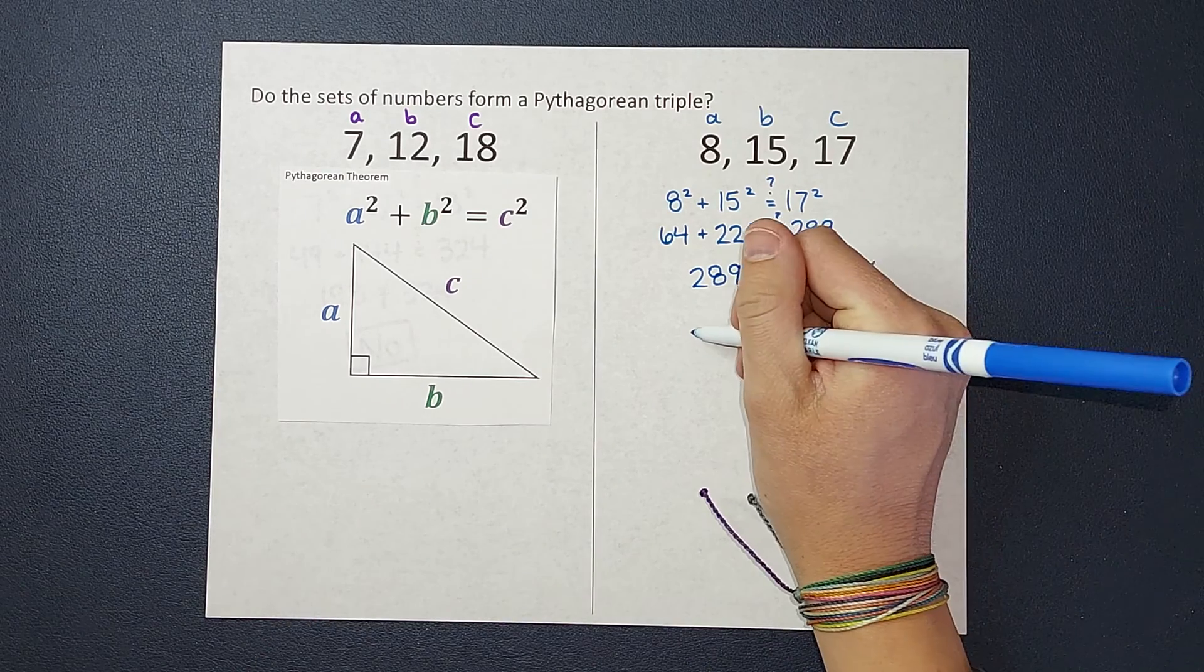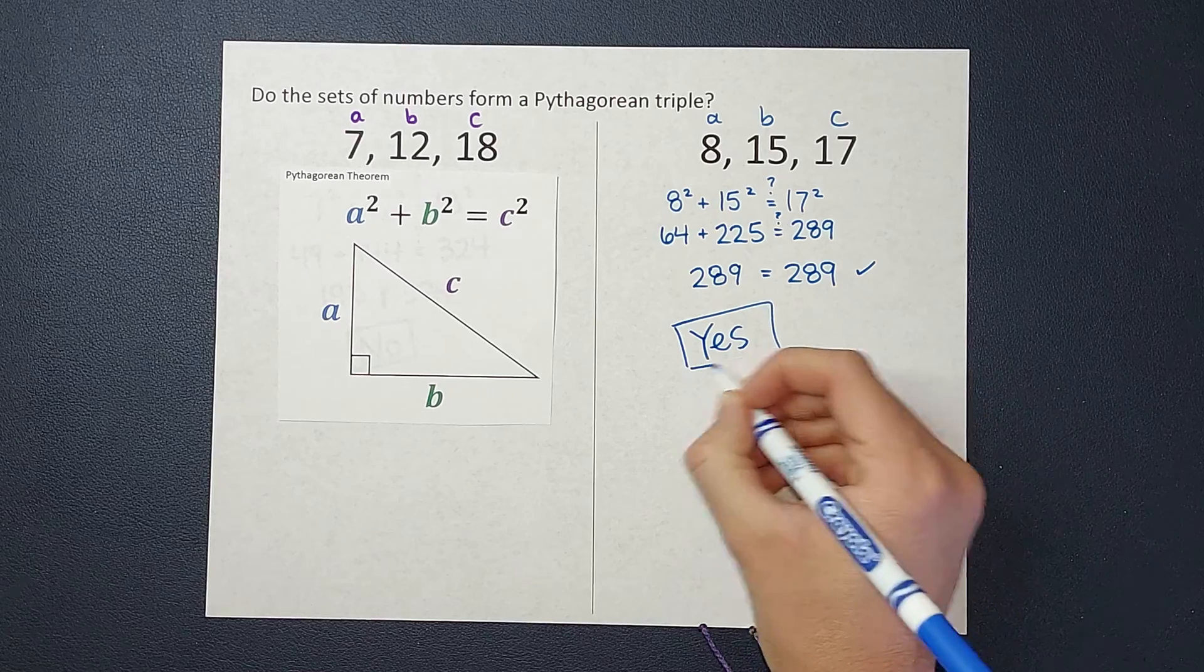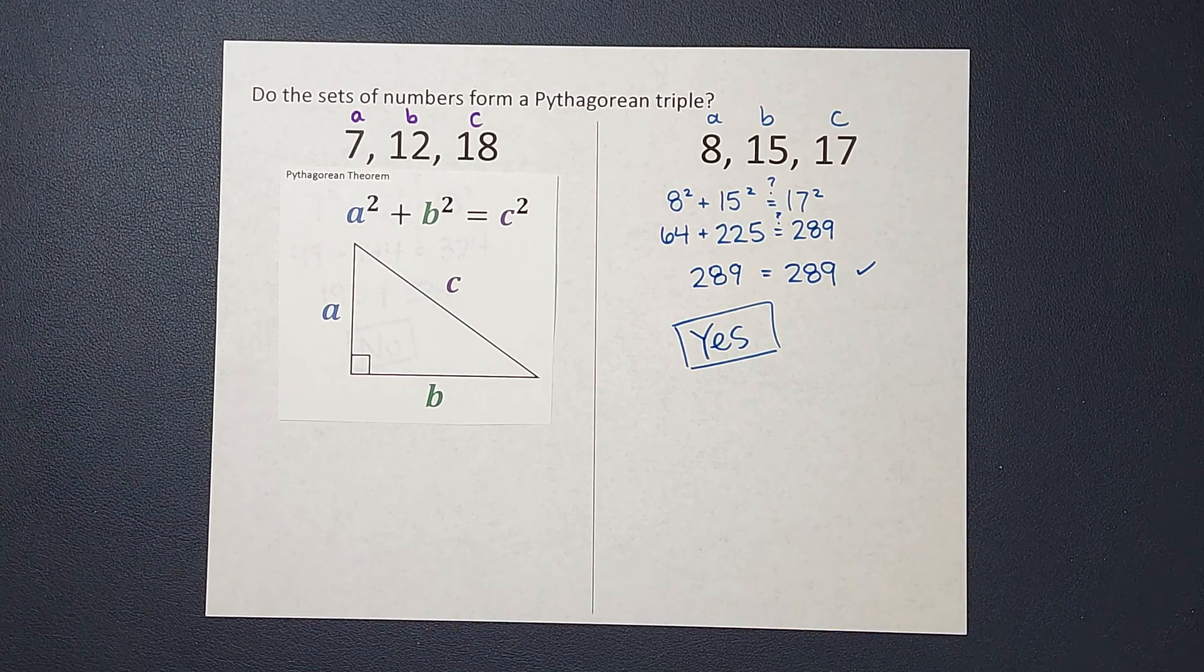So 8, 15, and 17, yes, these are a set of Pythagorean triples. That doesn't sound like proper English, but we'll pretend it was.